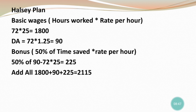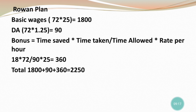Now for the Rowan plan. Basic wages and dearness allowance are the same: basic wages = 72 × 25 = 1800, dearness allowance = 72 × 1.25 = 90. Only the bonus changes. Rowan bonus formula: time saved × (time taken ÷ time allowed) × rate per hour = 18 × (72 ÷ 90) × 25.